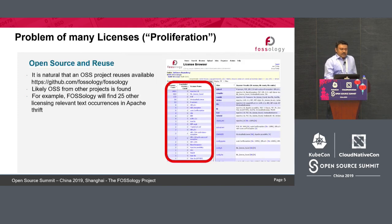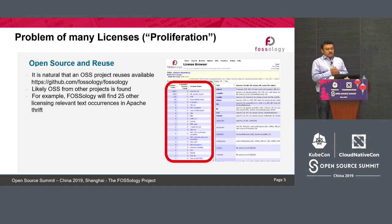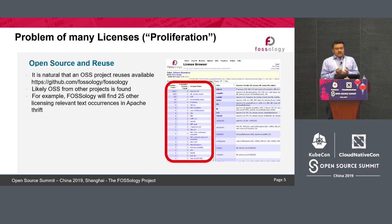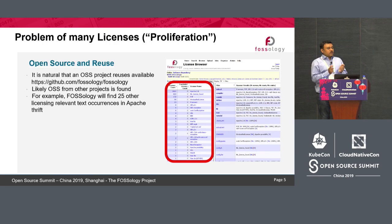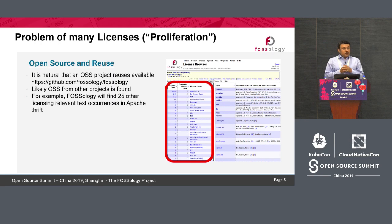Why do you need to find this? That's important. We use a lot of open source software and the problem is license proliferation. We use software to build another software, and the problem is that multiple software components when reused are actually built with some other licenses. So we need to take care of license compliance — we need to find out which licenses have been used inside the software that we are using or reusing.